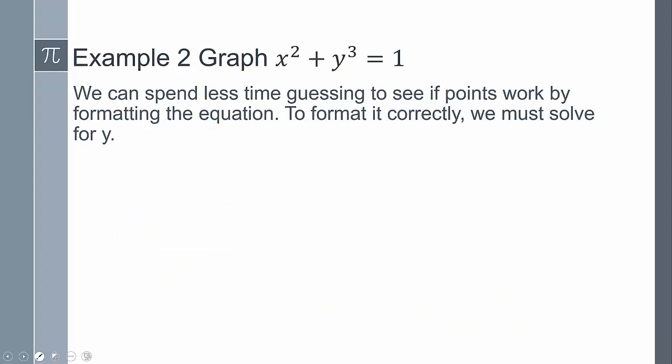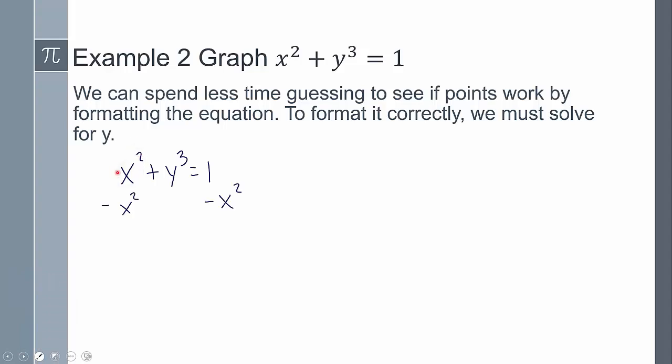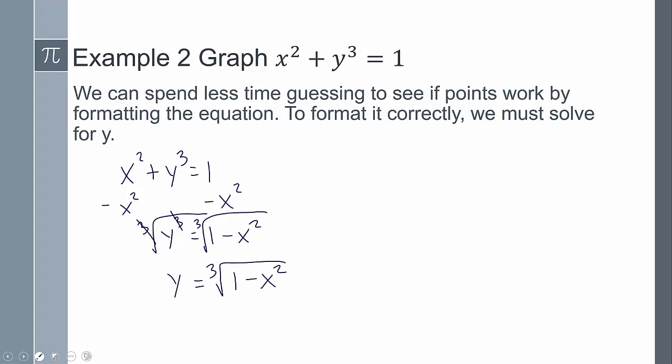Instead of spending all this time guessing which points work on the graph, there is actually a method to the madness in being able to find where the points exist. We're going to use the idea of the input-output process. To do that, you solve for y — solving just means get the value by itself. So I subtract x squared on both sides to get y cubed equals 1 minus x squared, and then take the cube root of both sides to get y equals the cube root of 1 minus x squared.